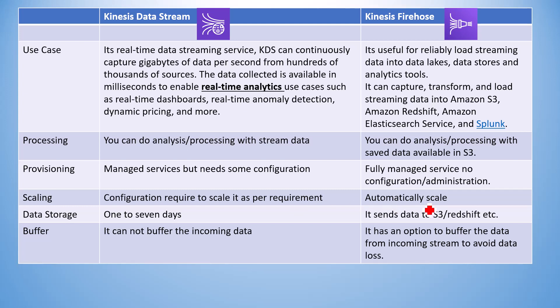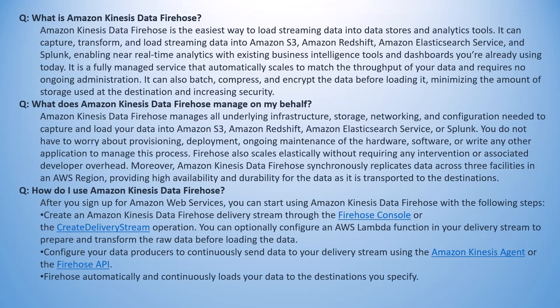Kinesis Firehose scales automatically based on requirement, whereas with Data Streams you need to manage scaling manually. Data can be retained for one to seven days in Data Streams, which you can analyze during streaming while already saving data to S3. That's the question and answer — Kinesis Data Firehose is the AWS managed service requiring no extra time for configuration or management. That's all from my side, thanks.